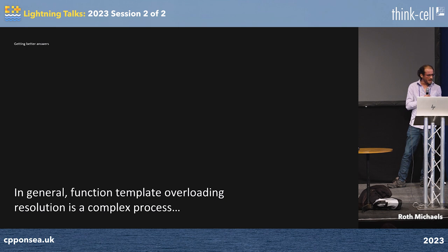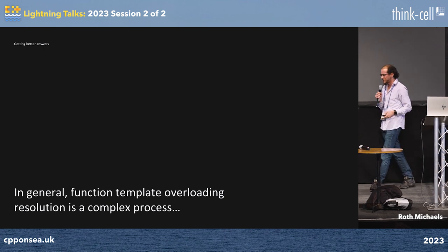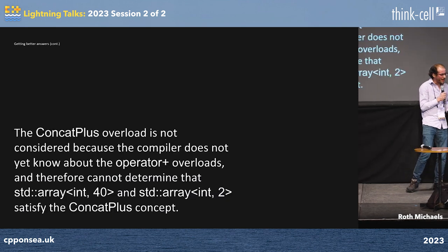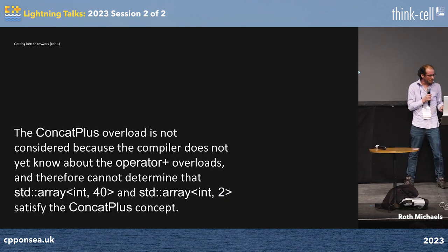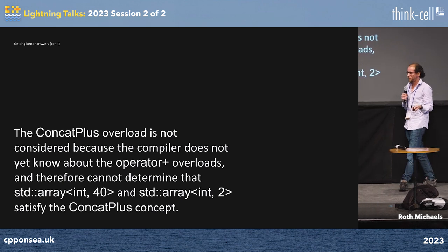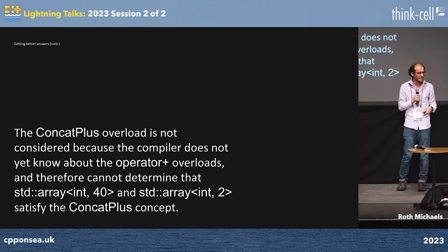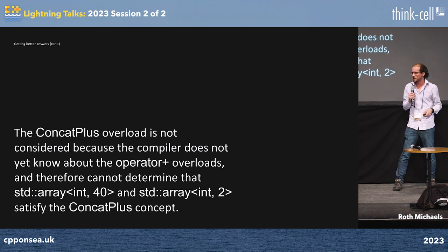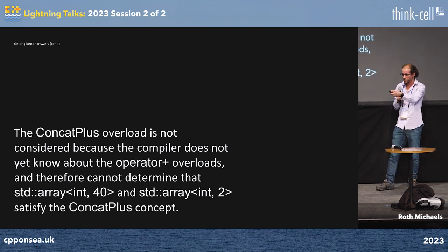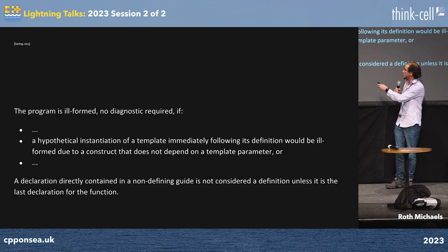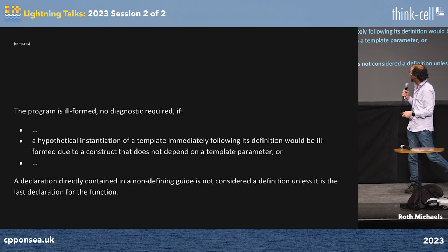I asked it why. It went on for a few more paragraphs, then told me it couldn't determine it because of the order in which things appeared. I thought, maybe ChatGPT is making stuff up again. So I asked it how it knew, and instead of saying 'I'm a large language model,' it had a citation — part of the standard I had not seen before. It seemed kind of believable following this definition.